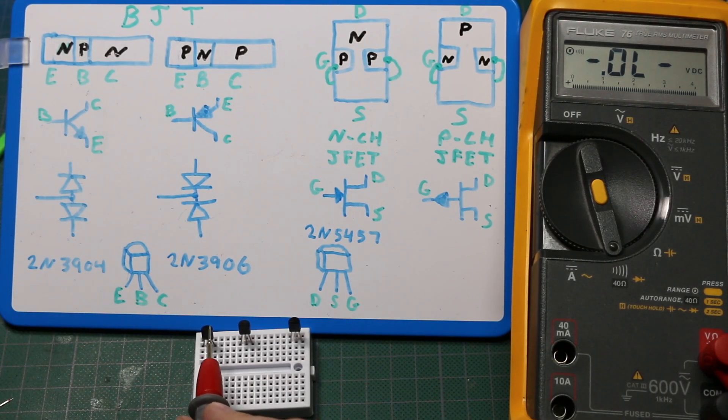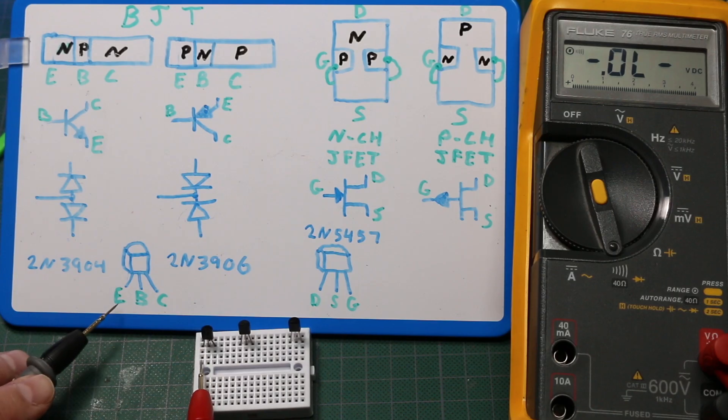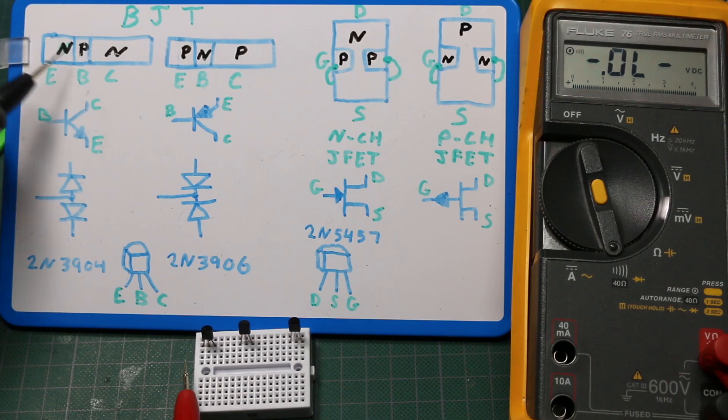So for this NPN transistor, from left to right, the pins are emitter base collector. So if I want to test the base emitter PN junction, I will put the positive probe on the base, which is an anode, and the negative probe on the emitter.